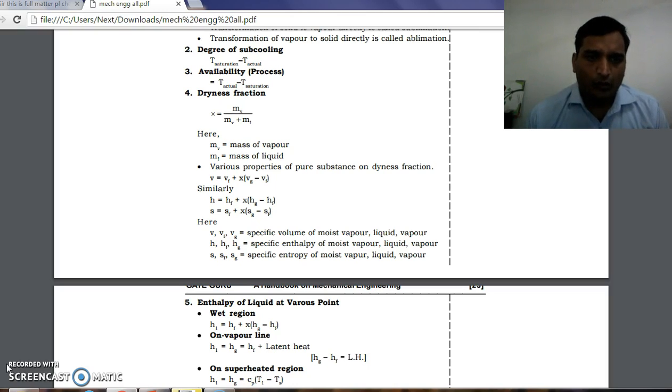Similarly, entropy: s equals s_f plus x times (s_g minus s_f), where x is the dryness fraction. In all these three definitions of specific volume, specific enthalpy, and entropy, here you can see what is v, v_f, v_g, and h, h_f, h_g, and s, s_f, s_g.